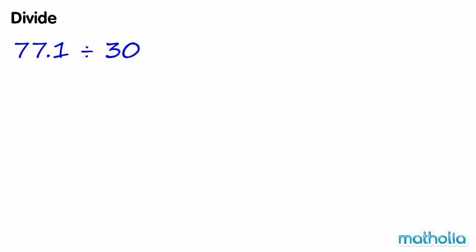Divide. Find 77.1 divided by 30. 30 is a multiple of 10, so we can write 77.1 divided by 30 is equal to 77.1 divided by 3 divided by 10.